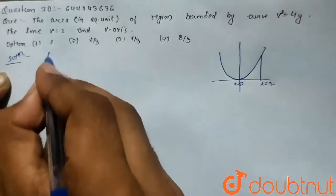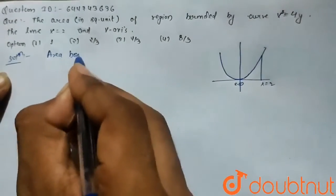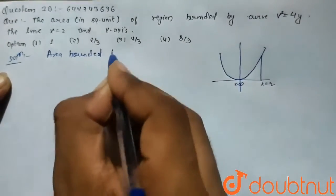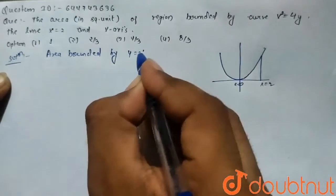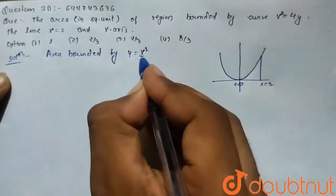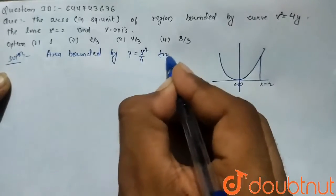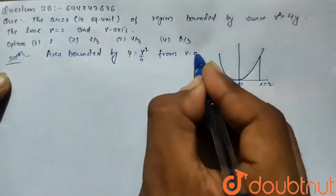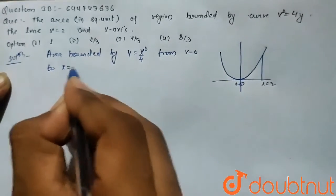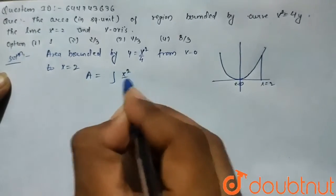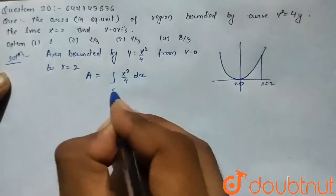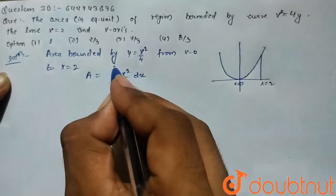So here the area bounded by y equals x squared by 4, from x equals 0 to x equals 2, is given by A equals the integration of x squared by 4 dx from 0 to 2.